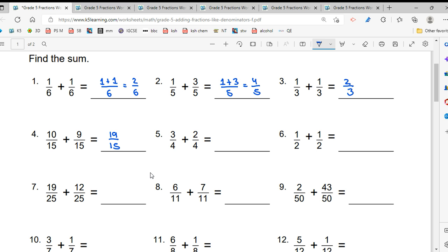Next wale ka answer? 5 upon 4. Next wale ka answer? 2 upon 2, that is nothing but 1. 2 ones are 2, take it?